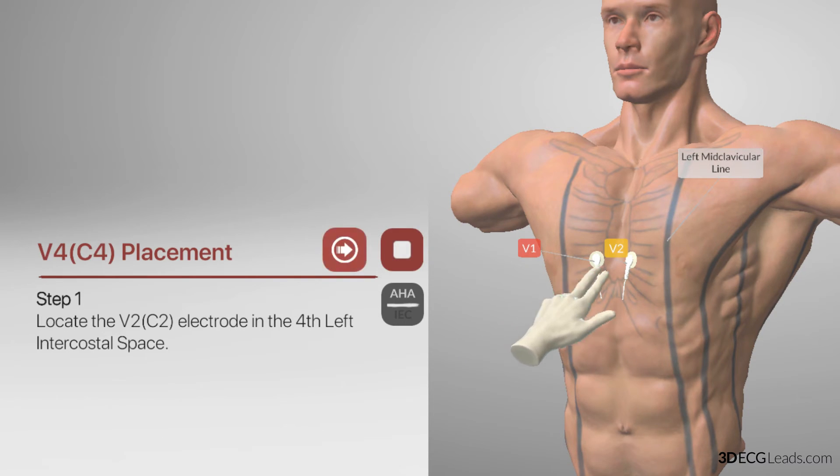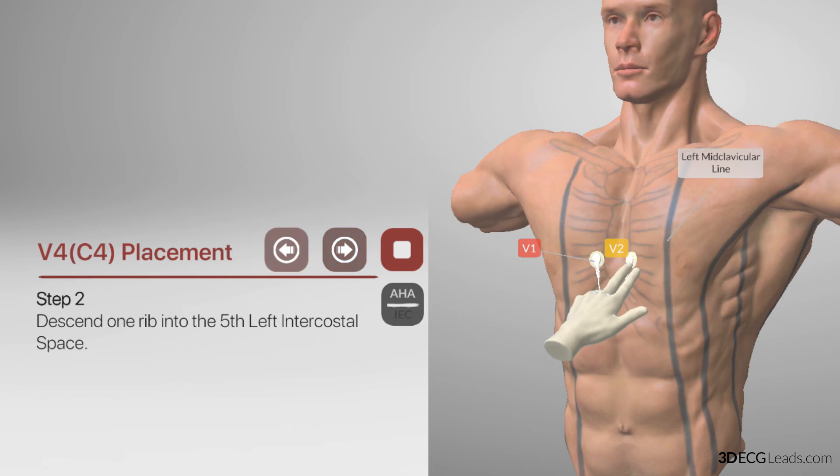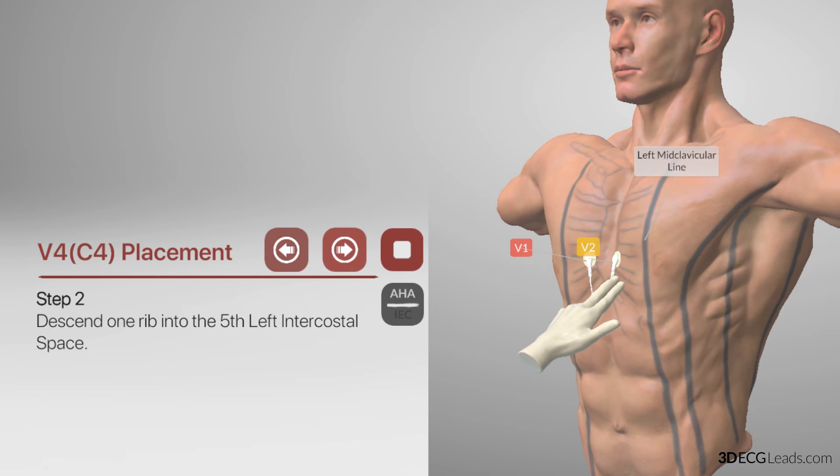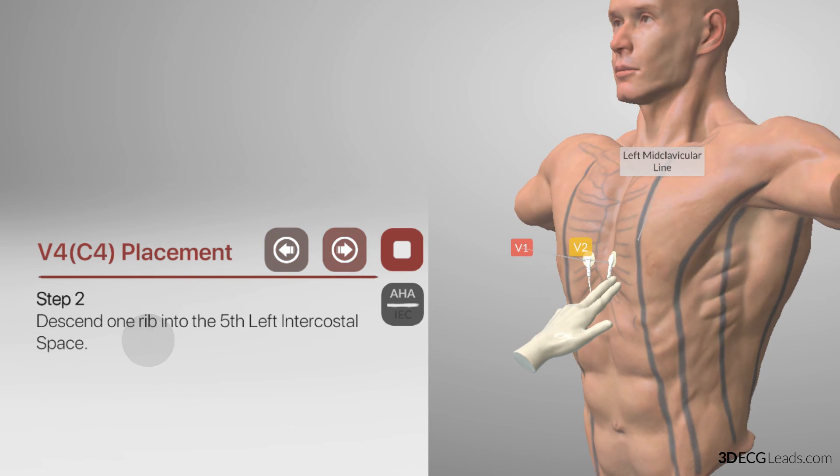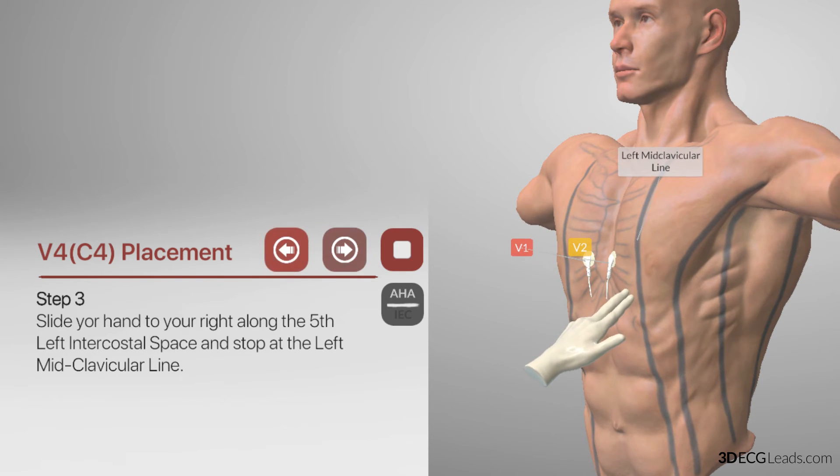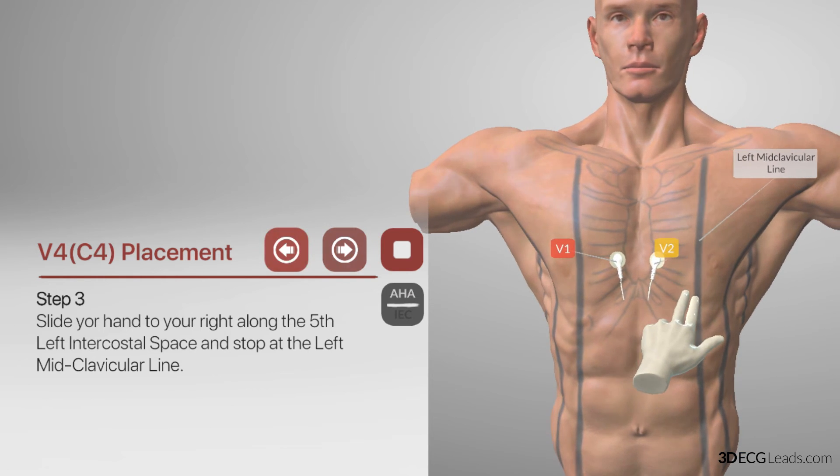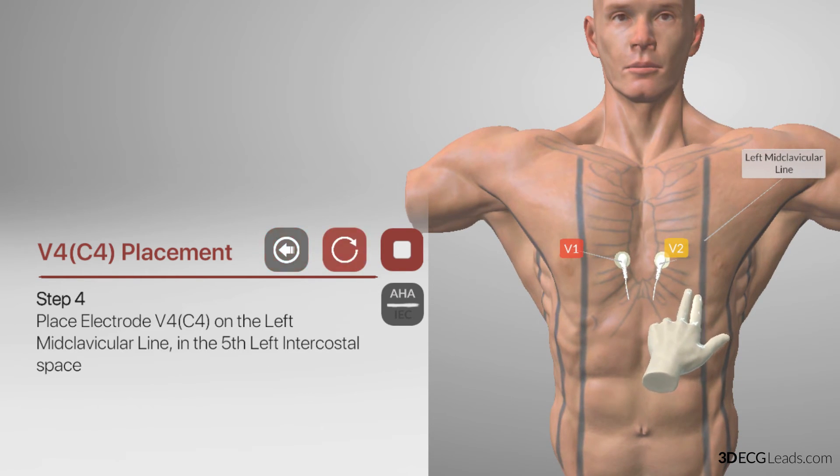So, to place V4, firstly, you have to locate V2 in the fourth intercostal space. From here, you descend another rib into the fifth intercostal space, and slide your hand along the fifth intercostal space, until you reach this line that is drawn here, labeled the mid-clavicular line.